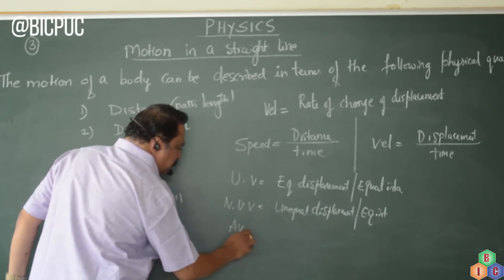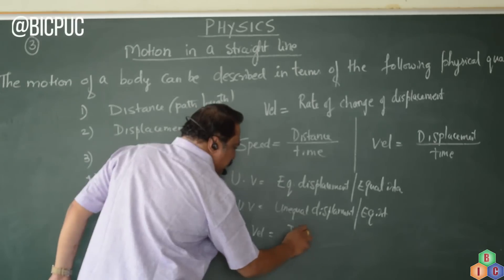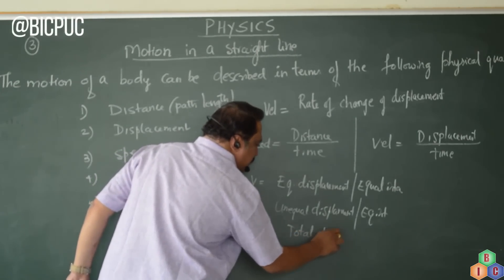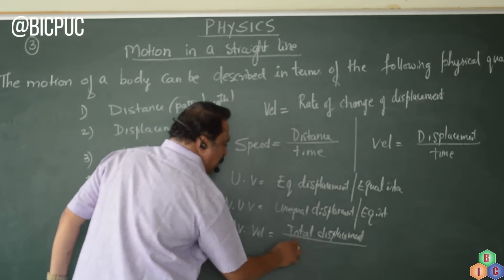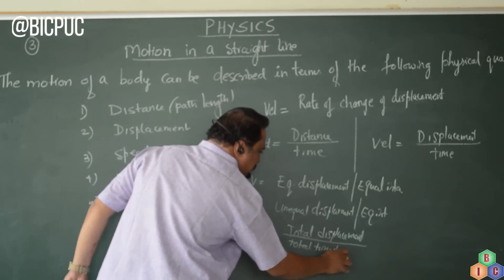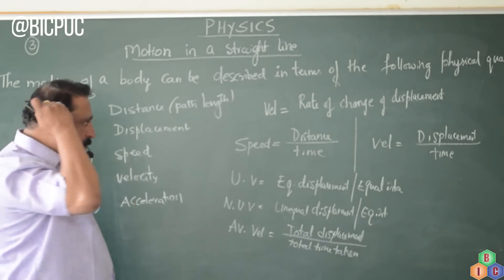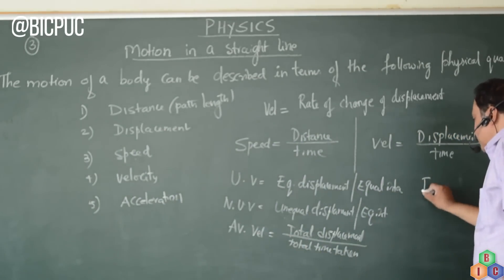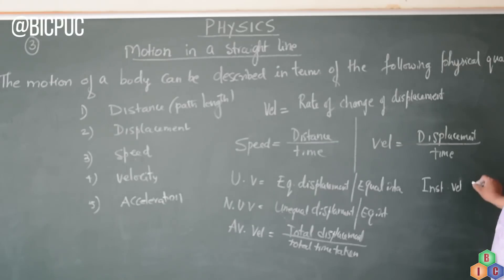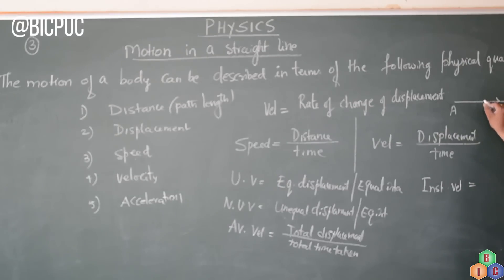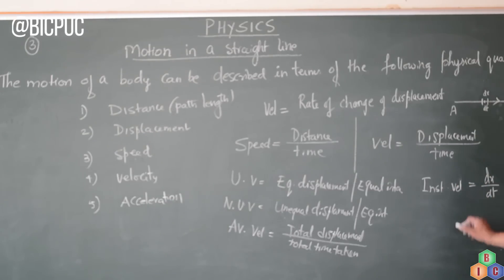Average velocity is total displacement divided by total time taken. Average velocity is not sufficient to find out the displacement at any instant. So we have instantaneous velocity. If a particle moves from A to B and I want to find the velocity at a specific position, I take a very small distance dx and a small time dt. The ratio dx by dt gives instantaneous velocity — V instantaneous equals dx by dt.